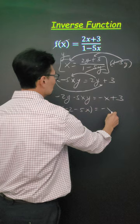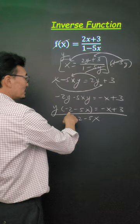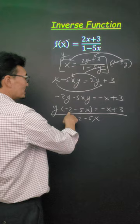Then divide it by negative 2 minus 5x to the left and right side of the equal sign. So there's your inverse function.